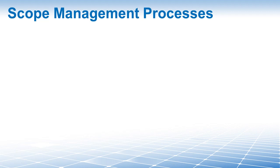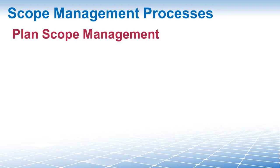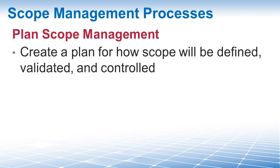There are six processes in project scope management, and not surprisingly, the first four processes are all about planning. First: Plan Scope Management. This is the process of creating a scope management plan that documents how the project scope will be defined, validated, and controlled. This is where we plan and document how we ensure delivery of a product, service, or result that meets the expectations of the customer. The two key documents we create are the scope management plan and the requirements management plan.